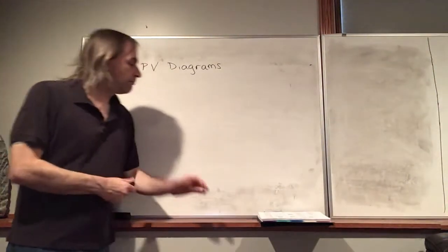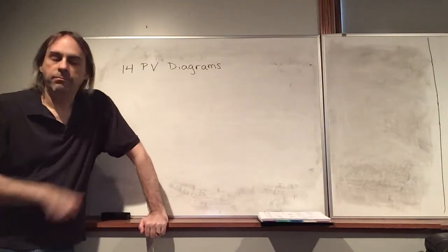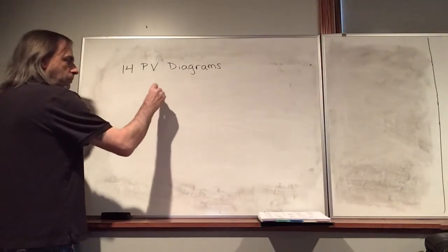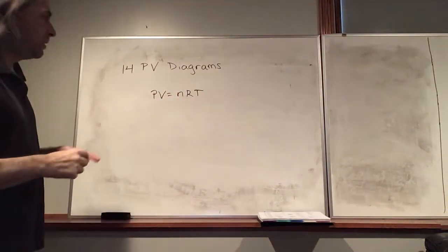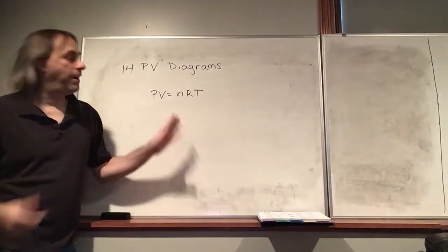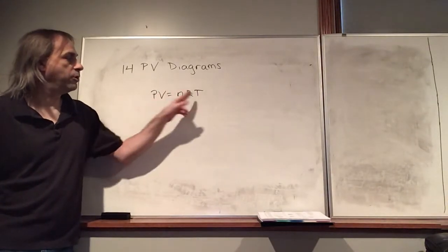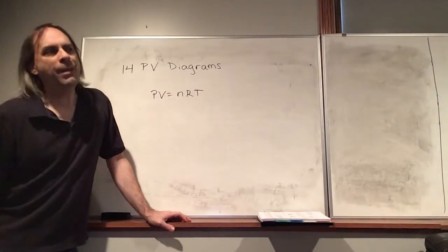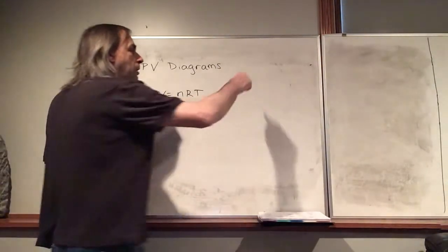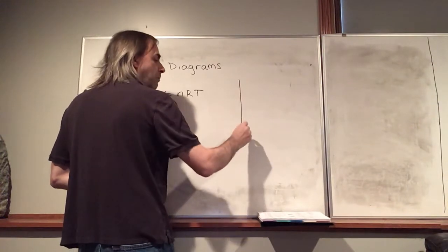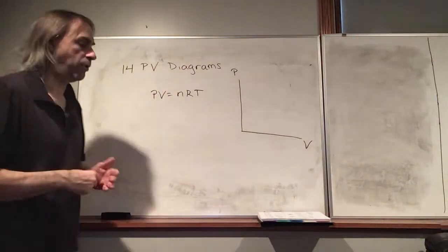For this lecture, we're going to talk about something called PV Diagrams. First, let's look at the ideal gas law. For any given gas, n is an amount of the gas, and we've got three variables: pressure, volume, and temperature. We can't really plot all three variables at the same time. A PV diagram is where we plot pressure as a function of volume. Temperature is kind of hidden here, but these diagrams are extremely useful.